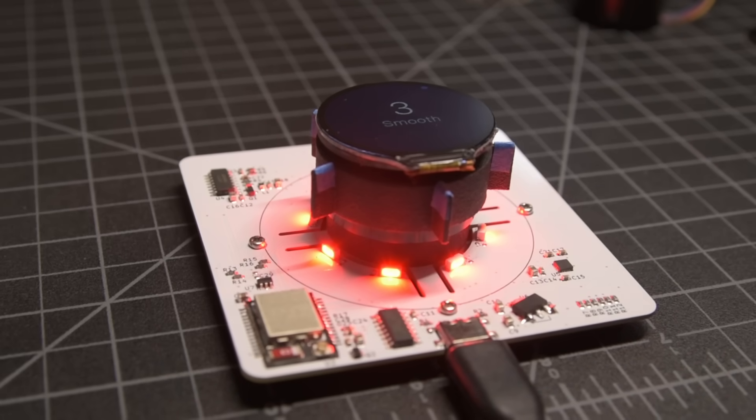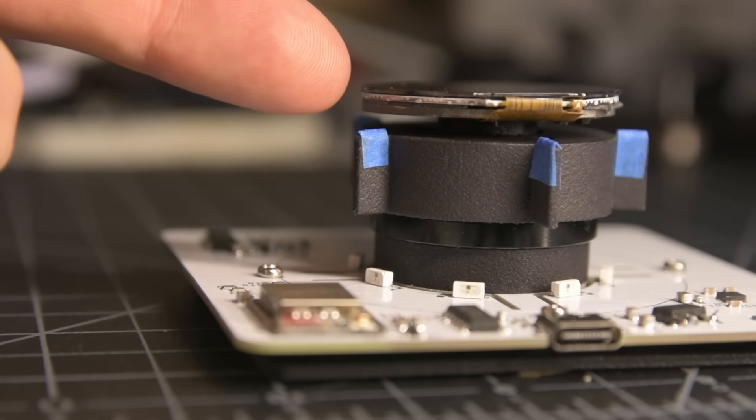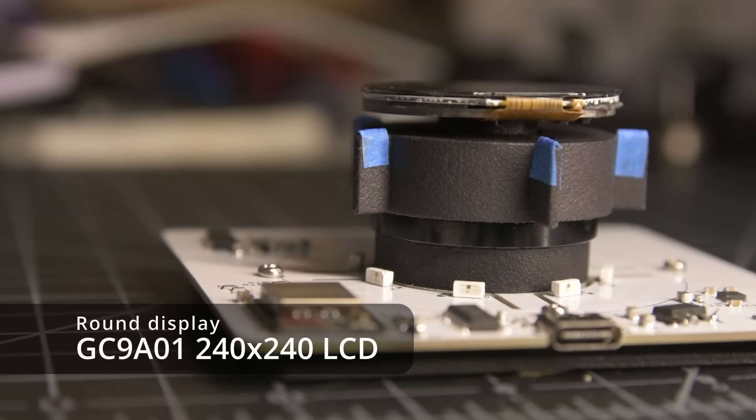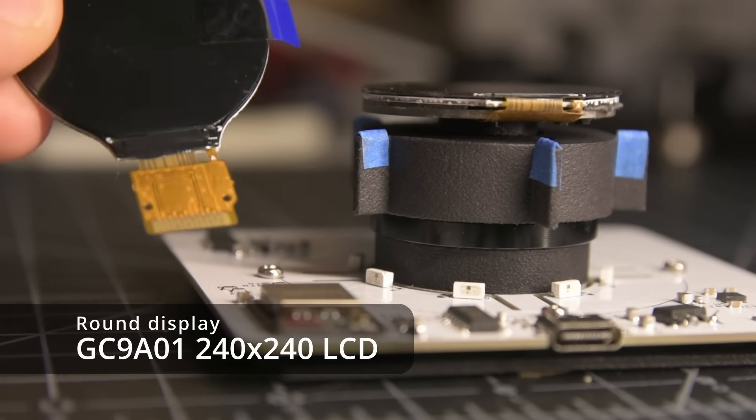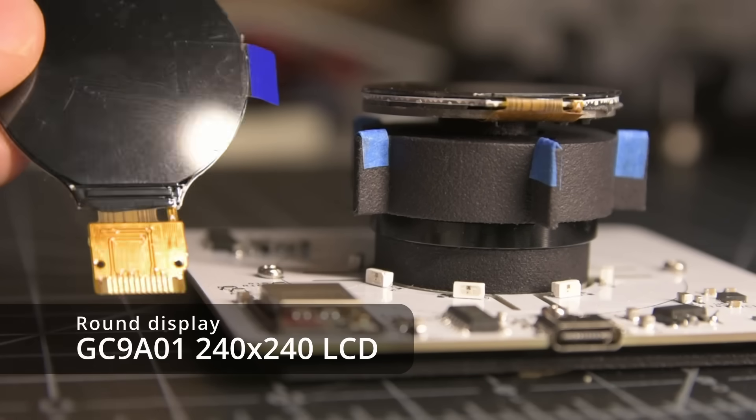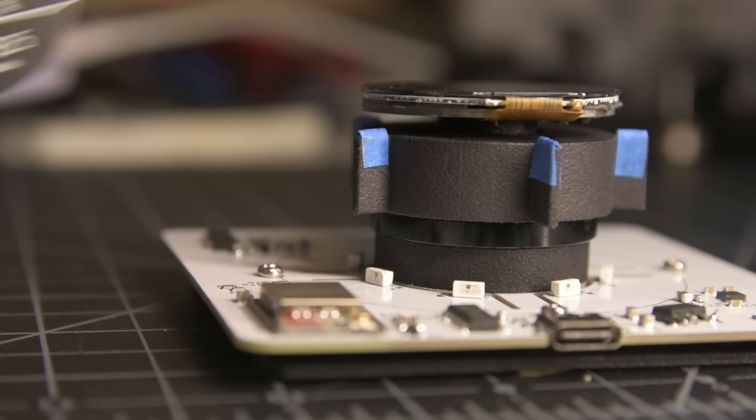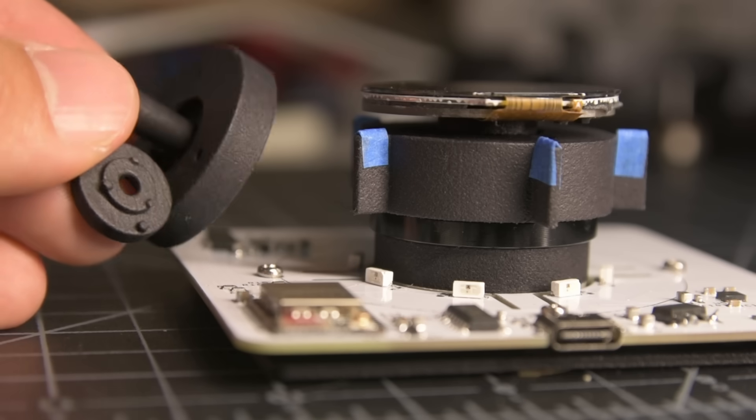So let's talk about the internal components. Obviously you can see the round LCD on the top here. This is the GC9A01 240x240 LCD, info in the description, and it's suspended above the motor with a custom PCB and some more 3D printed pieces. We'll look at those a little bit later.